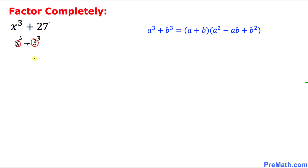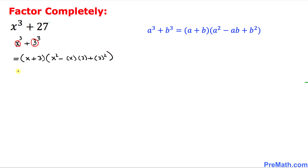Then we can simply factor this one out. That is going to be x + 3, times a² which becomes x², minus x times b which is 3, and then plus 3². Let's simplify: that gives us (x + 3)(x² - 3x + 9), and these are our complete factors.